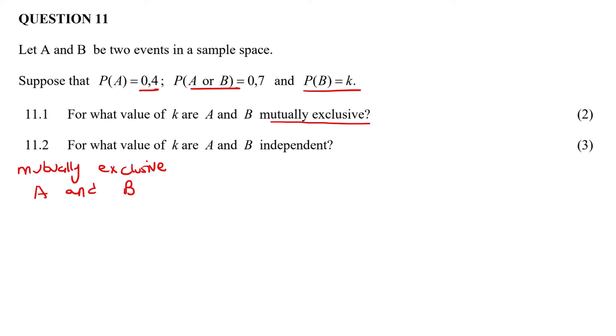When you are excluding, it means that you're pushing things away, or you're not allowing things to happen, or you're not allowing the friend to be part of your friend group. So when things are mutually exclusive, it means that A and B cannot happen at the same time. It means that the probability of A and B must be zero.